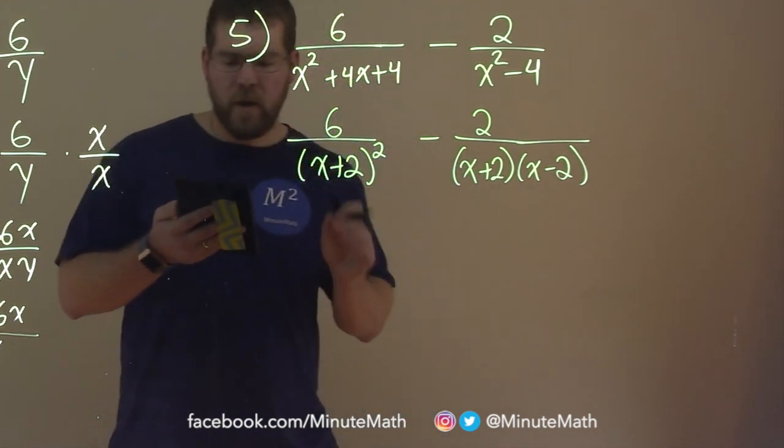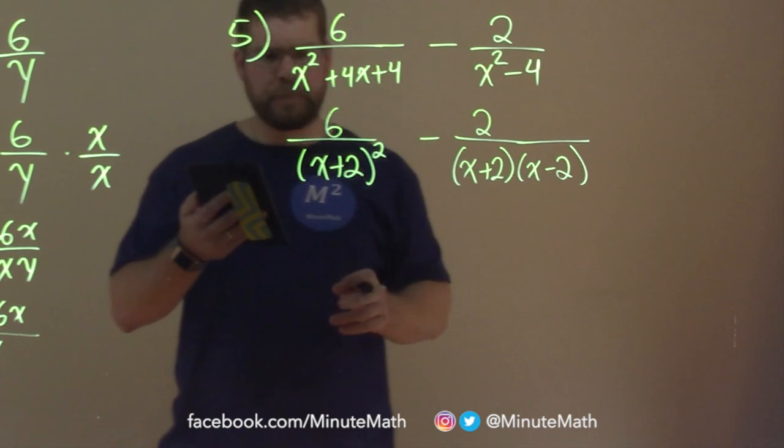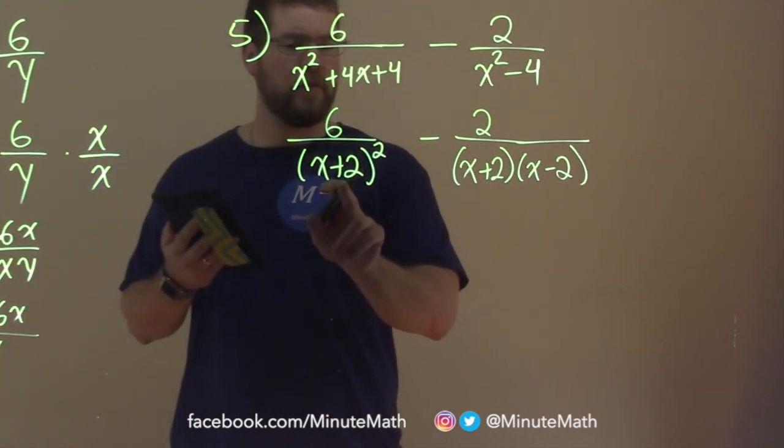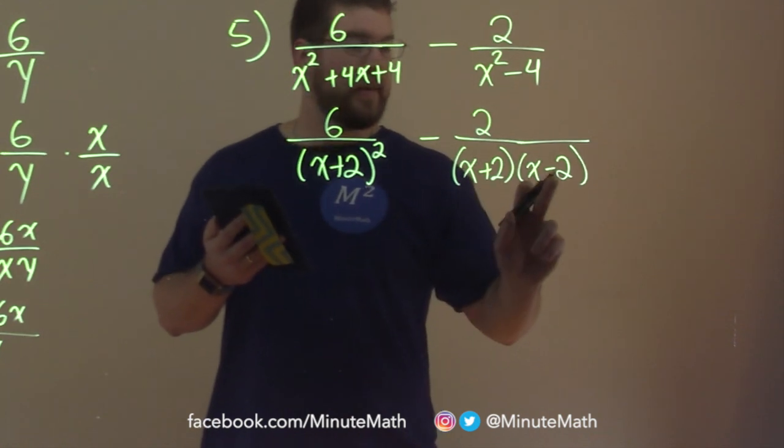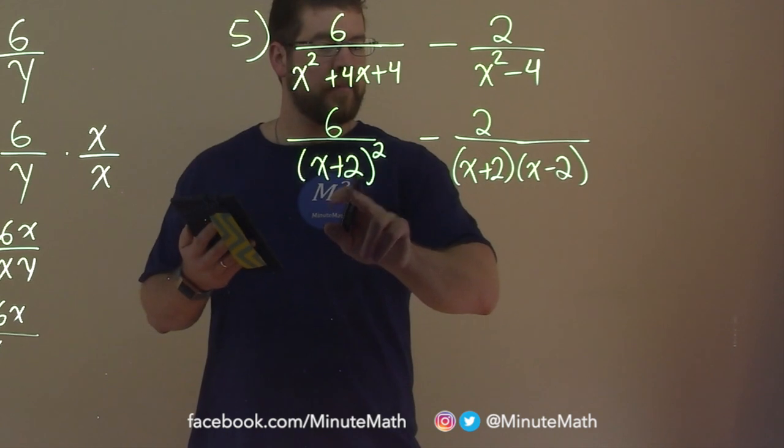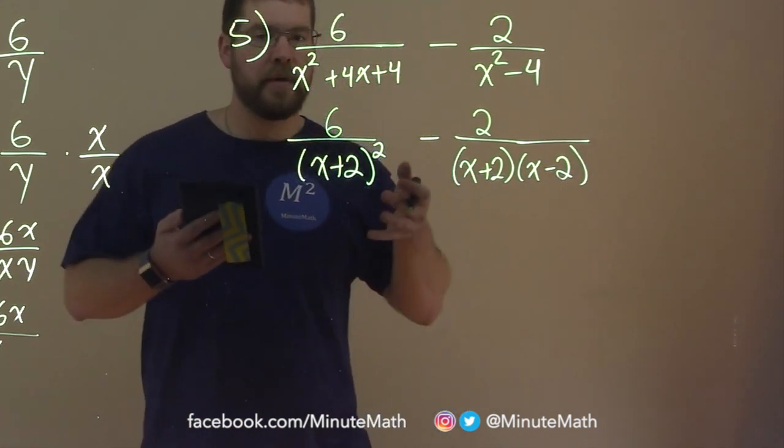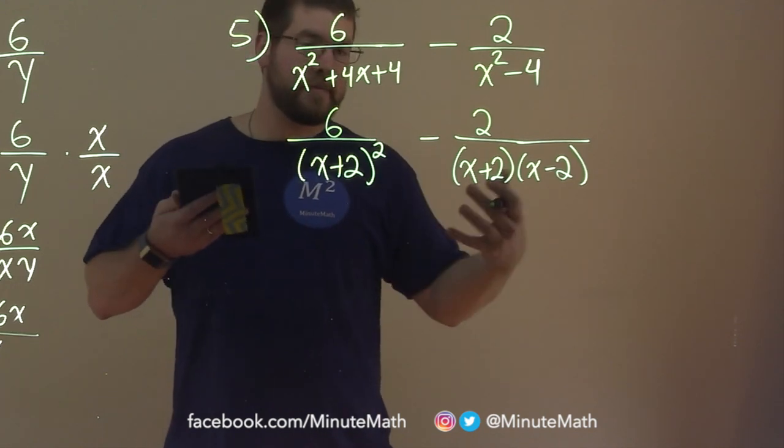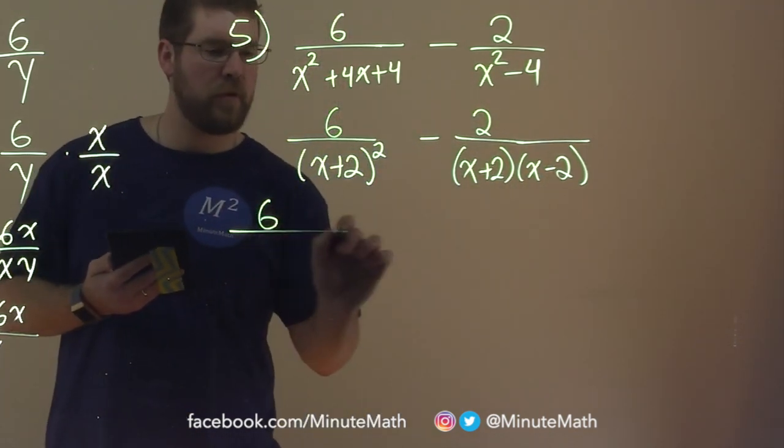And so what can we do here now to find a common denominator? Well, we have x plus 2, and we have 2 of them, x plus 2, x plus 2. We have 1 of them here. We have an x minus 2 here. If I can bring an x minus 2 to this denominator and another x plus 2 to this denominator, we would then have a common denominator. So now I'm getting my formula, basically bringing it all together.